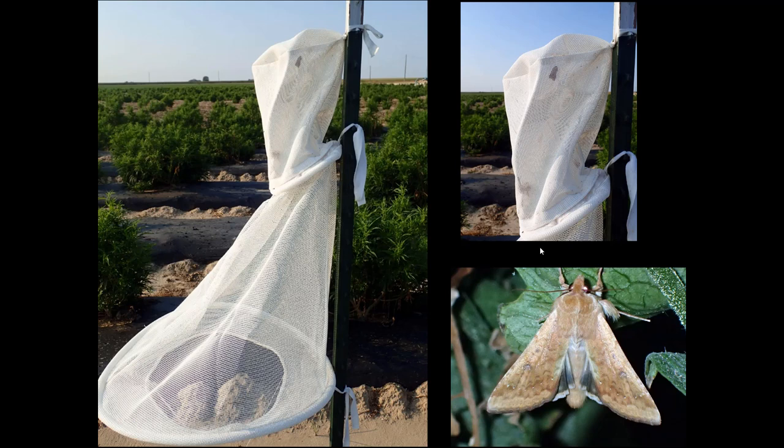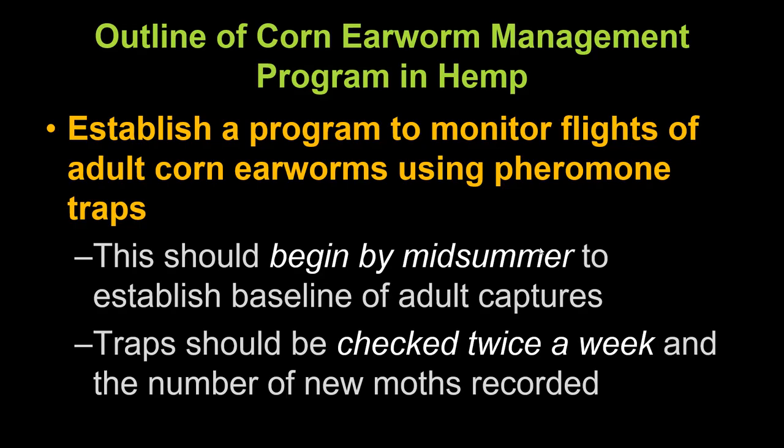You put the lure at the base of the trap; the lure contains the sex attractant of the female corn earworm. Male moths are attracted to it and funneled up near the top. One of the nice things about a pheromone trap versus a light trap is you get concentration of the species of interest — corn earworm — rather than dozens of other kinds of moths. These traps also keep moths in better shape; in a light trap they get beat up by beetles and other moths, breaking off scales and making identification difficult.